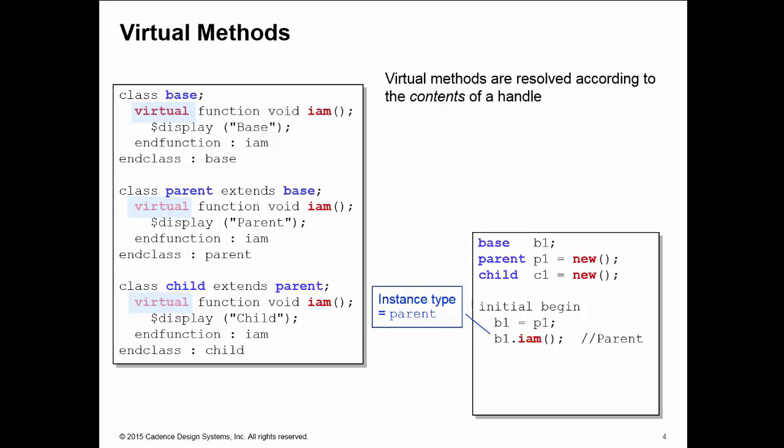We still look at the type of the B1 handle — that's a base class — so we go to the base class to execute 'I am'. When we get there, we find out that the 'I am' method is a virtual method. That forces us to go back to the handle, look at the contents of the handle, and we see that there's a parent instance inside. So we redirect the call to the parent class and execute the implementation in the parent class according to the contents of the handle.